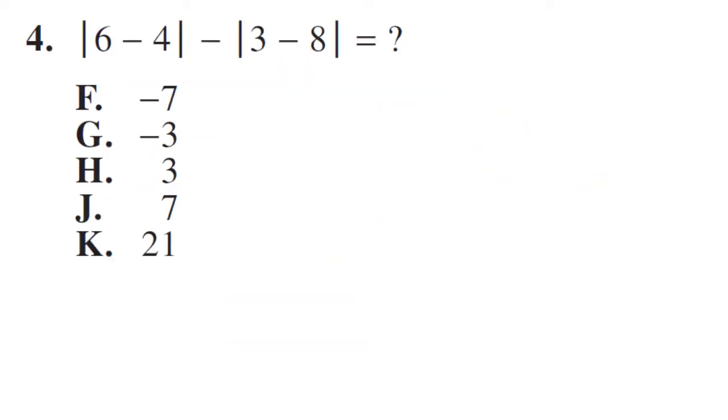So absolute value means anything between the bars is always positive. So 6 minus 4 is 2, and minus 3 minus 8 is negative 5, but that becomes positive 5 because it's between the bars. So 2 minus 5 is negative 3, so G.